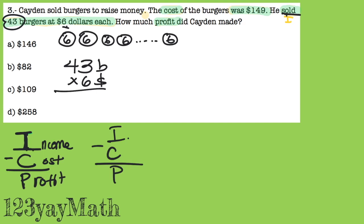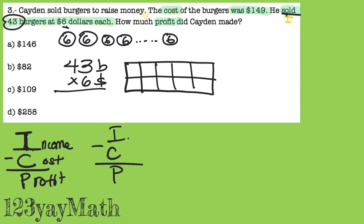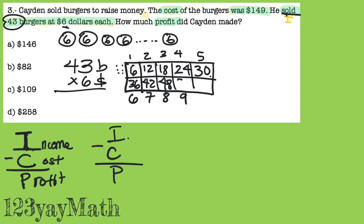When we multiply, what do we do? Our times tables. So 6 times 2 is 12, 6 times 3 is 18, 6 times 4 is 24, 6 times 5 is 30 — 30 is half of 60 — 6 times 6 is 36, 6 times 7 is 42, 6 times 8 is 48, 6 times 9 is 54, 6 times 10 is 60.